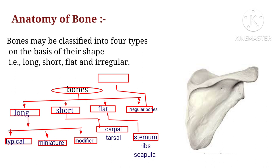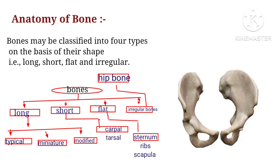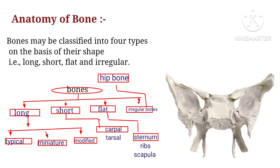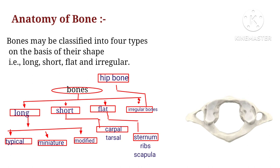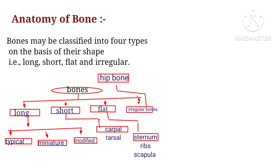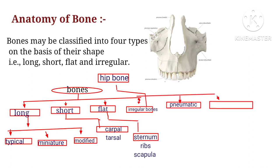Irregular bones include hip bones and certain bones of your skull. Some irregular bones contain air sinuses — these are called pneumatic bones. Examples of pneumatic bones include your maxilla and sphenoid, which are lined by epithelium.